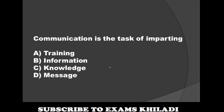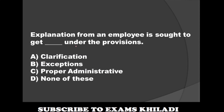Question: Communication is the task of imparting — Option A: training, Option B: information, Option C: knowledge, Option D: message. The correct answer is information. Next question: Explanation from an employee is sought to get dash under the provisions. Option A: clarification, Option B: exceptions, Option C: proper administrative, Option D: none of these. The correct answer is clarification.